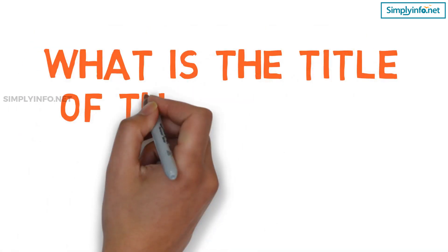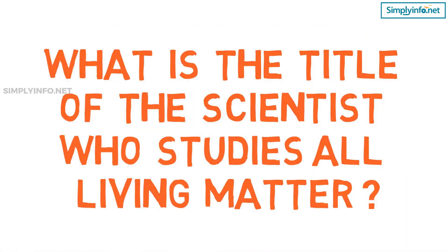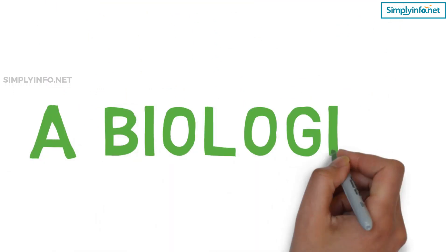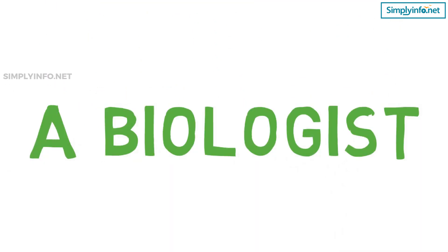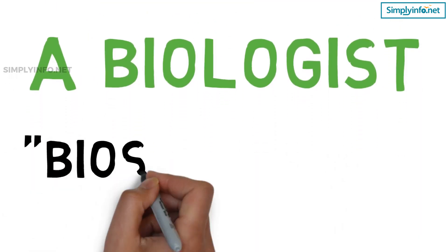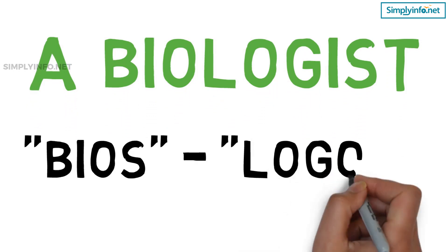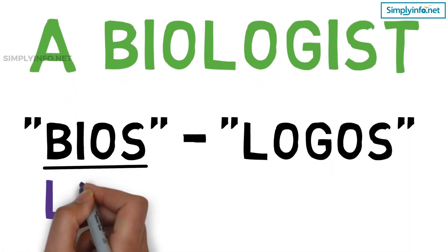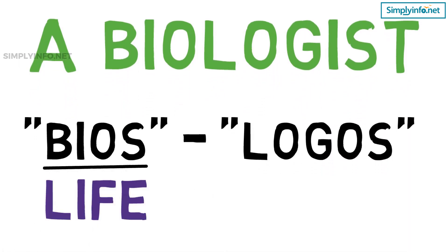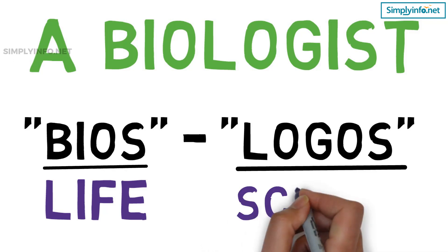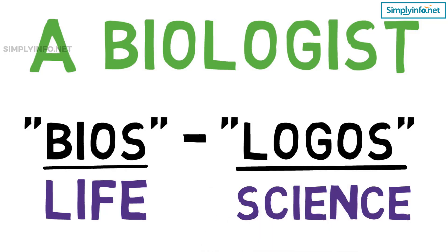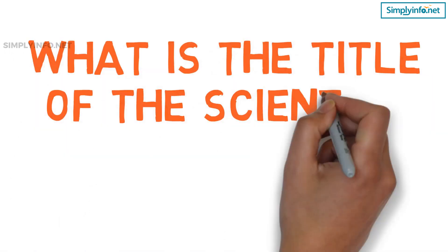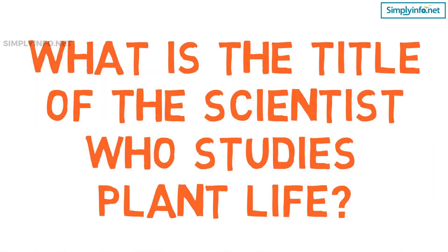What is the title of the scientist who studies all living matter? A biologist. Biologist is a combination of the Greek words bios, which means life, and logos, which means study or science. The science is biology. What is the title of the scientist who studies plant life?